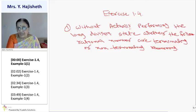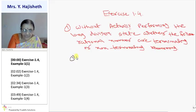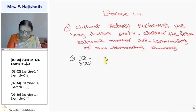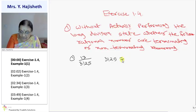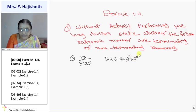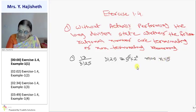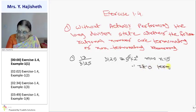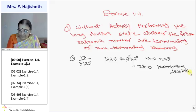You are given different examples. First is 13 by 3125. We only have to check whether 3125 can be expressed as 2 raise to m into 5 raise to n or not. 3125 is 5 raise to 5 into 2 raise to 0, so here m is 0 and n is 5. Therefore this rational number is a terminating decimal.